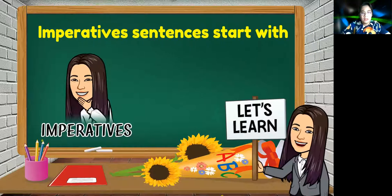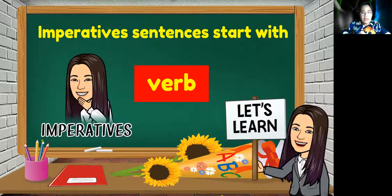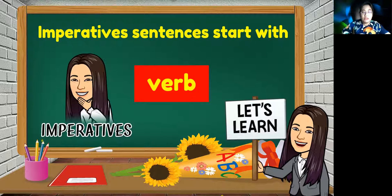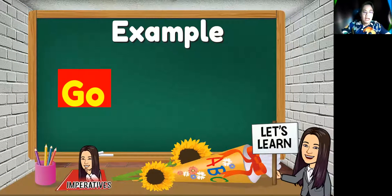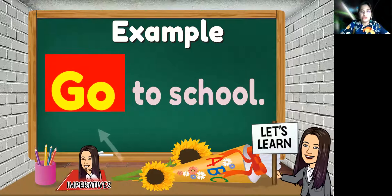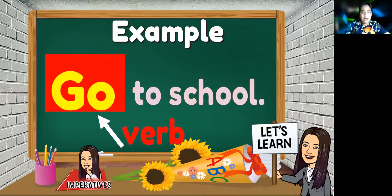Imperative sentences start with a verb. Verb adalah kata kerja dalam Bahasa Melayu. So, imperative sentences dimulai dengan kata kerja. For example: 'Go.' Go ialah pergi dalam Bahasa Melayu. So, 'go to school' — go is a verb. Go in Bahasa Melayu is pergi, to school ialah ke sekolah. So go is a verb.